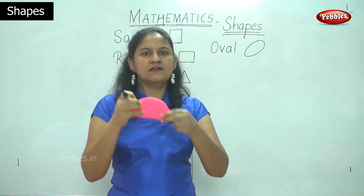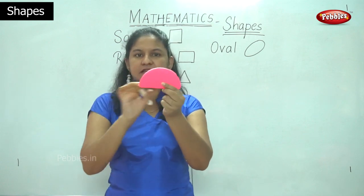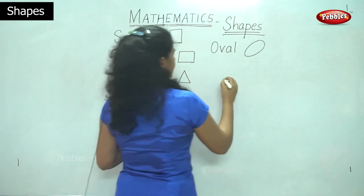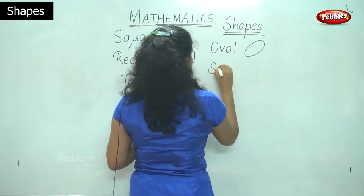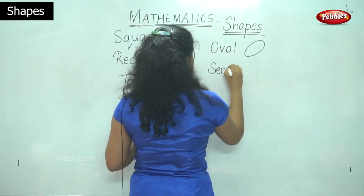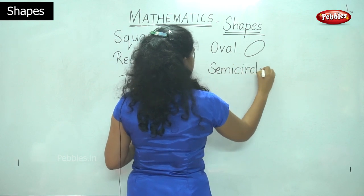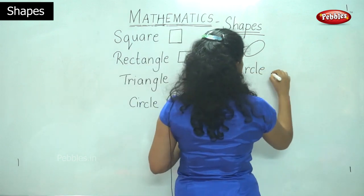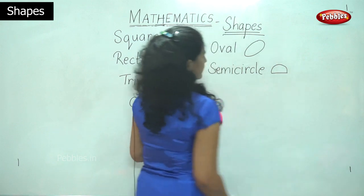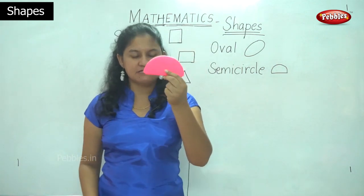The next is a semicircle. It is half of a circle. It is called the semicircle. Semicircle is half of a circle. So we call it a semicircle.